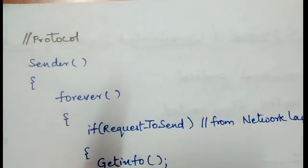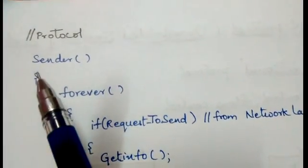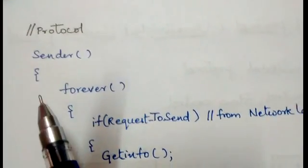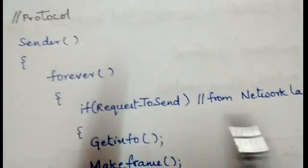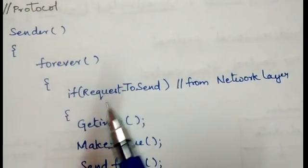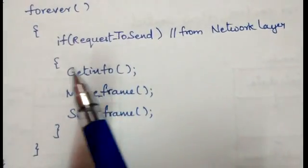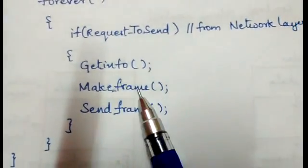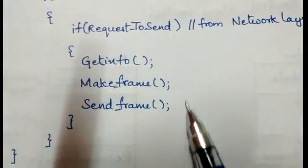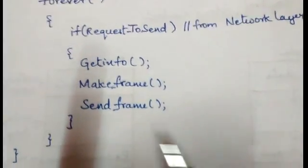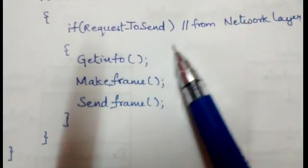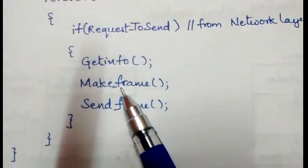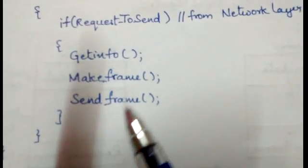Let's see the protocol. On the sender side, the sender constantly runs until it gets a request from the network layer — a request to send data. The data is sent to the data link layer, which makes the frames, and the made frame is sent by the physical layer. In code: Get info — data is taken; Make frame — the data link layer makes the data into frames; Send frame — the physical layer sends the frame made by the data link layer.